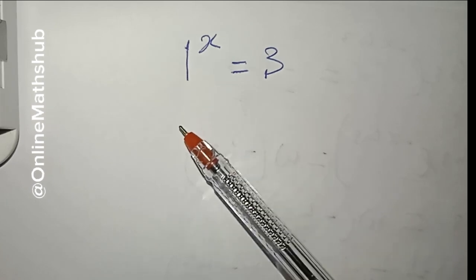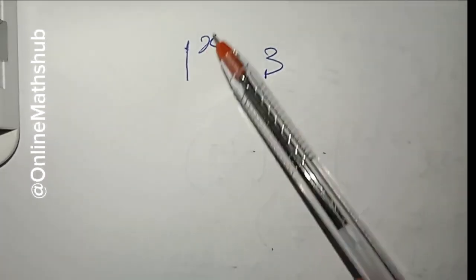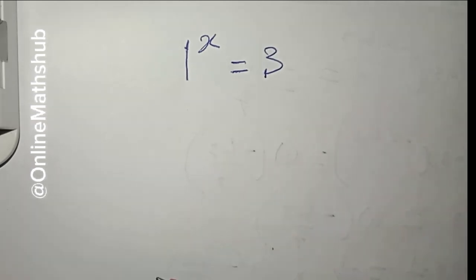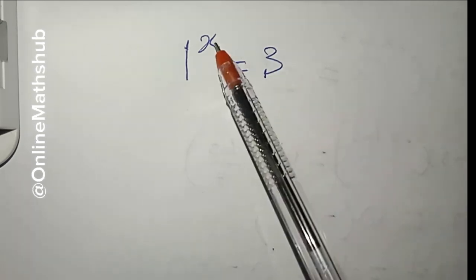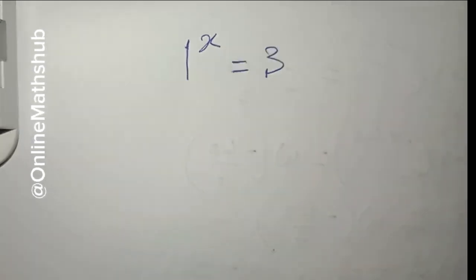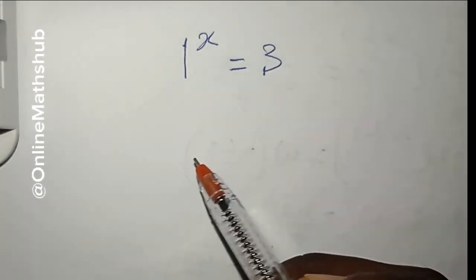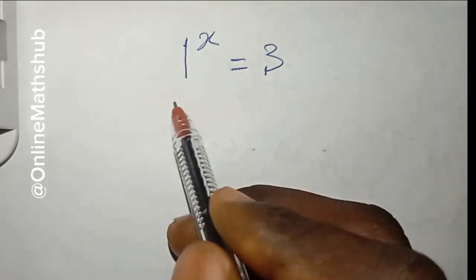Whenever you have this kind of equation where you have the variable at the exponent, one of the most natural things to do is to take the natural log — so that the exponent can naturally come down and you can continue simplifying from there. That is actually going to be the first step I will take.